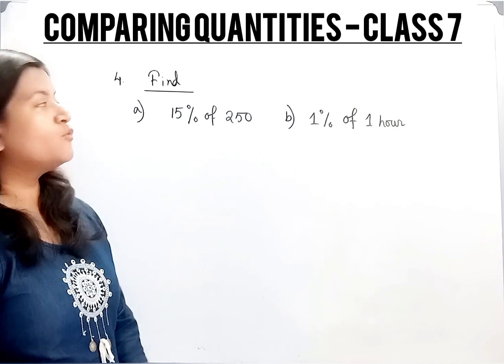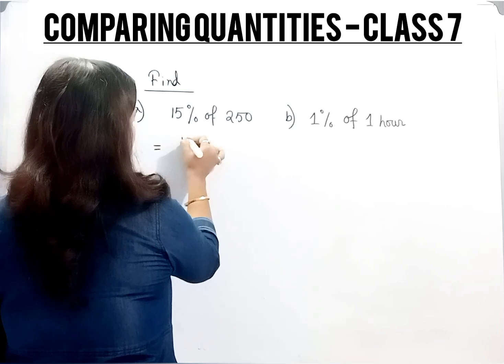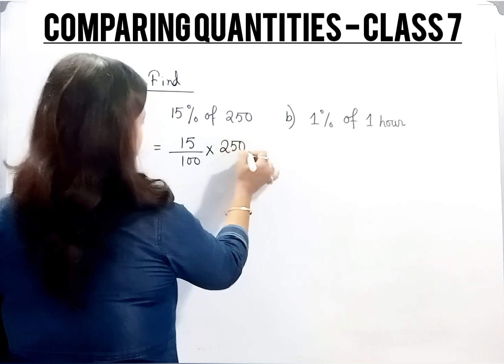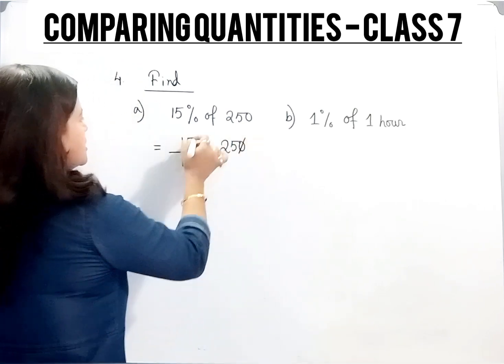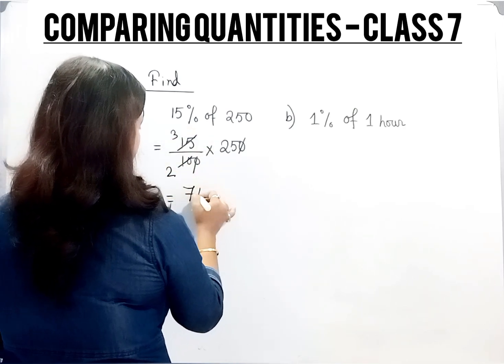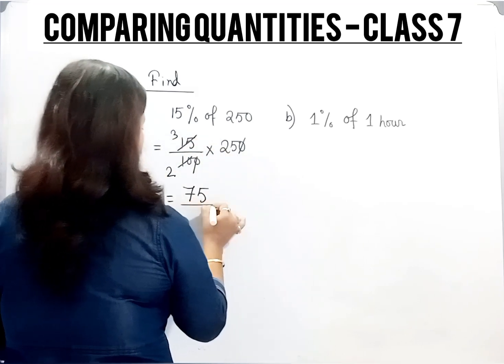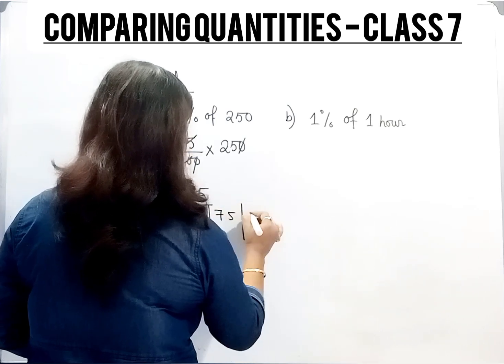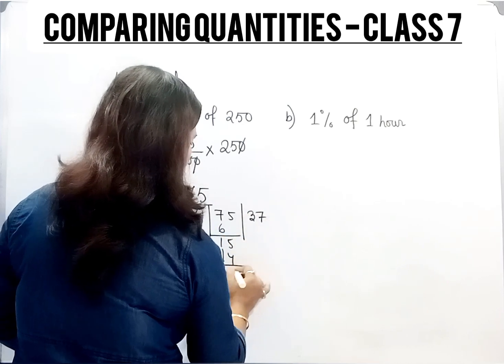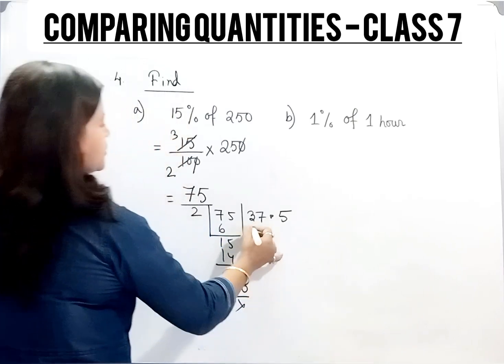Now question number 4. Find 15 percent of 250. 15 percent means 15 by 100 of, that's multiplication, 250. The zeros cancel. Divide by 5. So divide it 3 and 2. 3 into 25 is 75 divided by 2. Dividing gives us 37.5 is the answer.